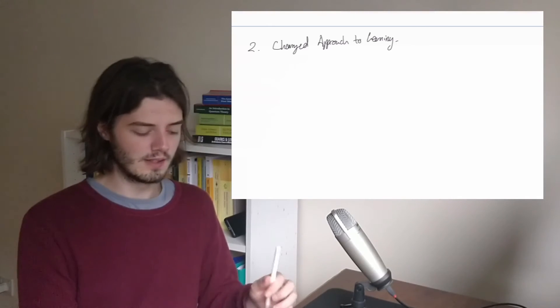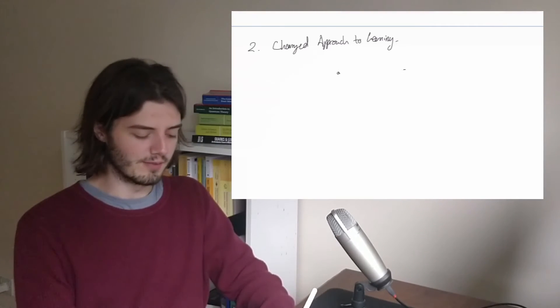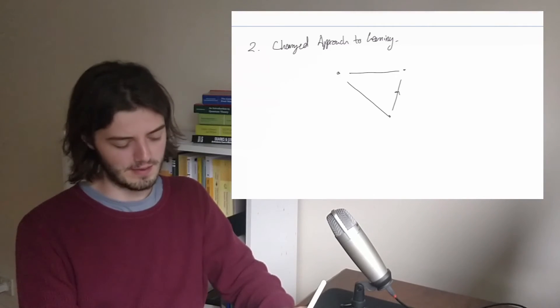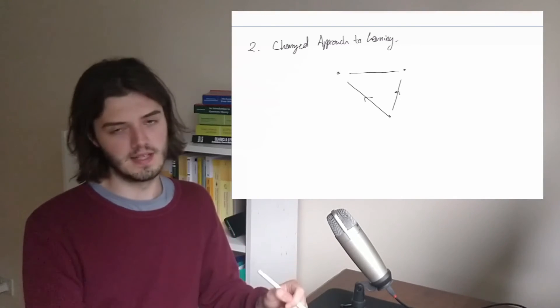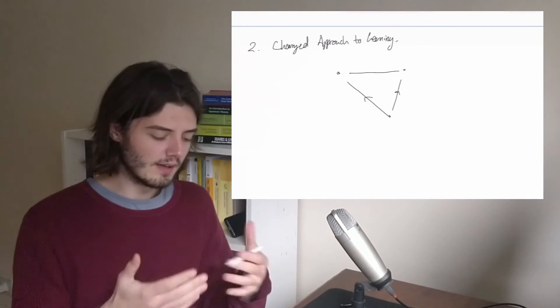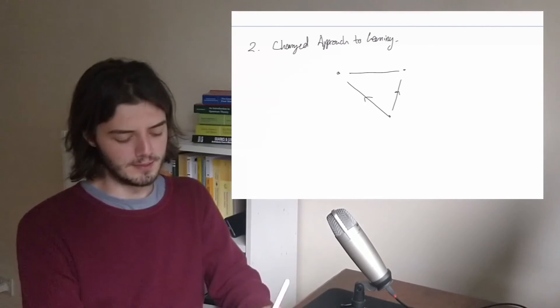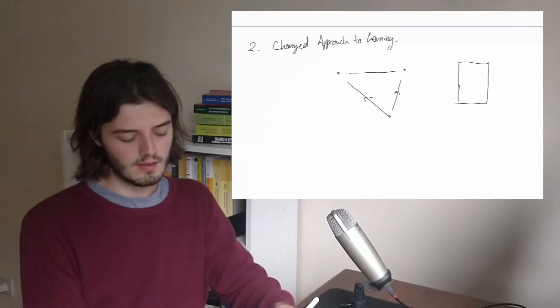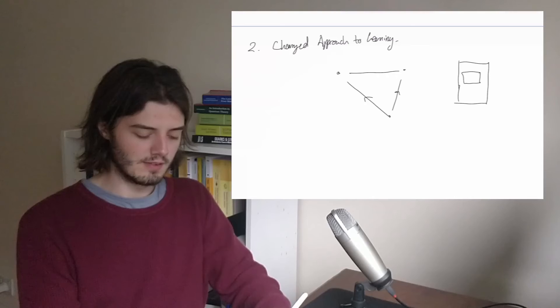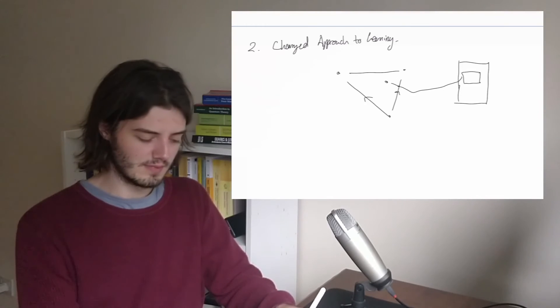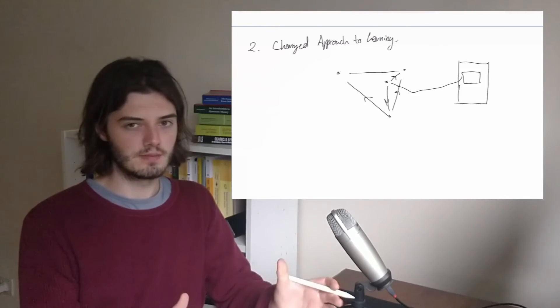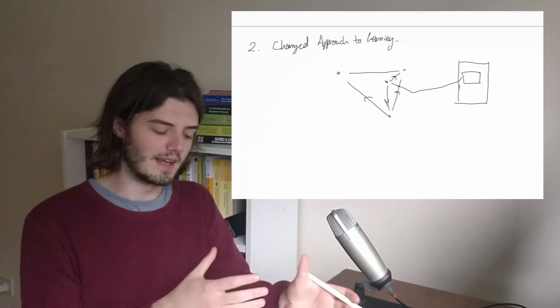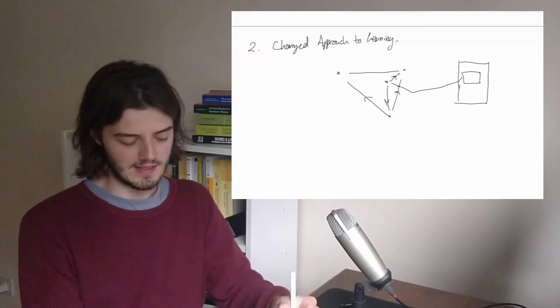I think what the Zettelkasten does is it really reverses that. You have your network of notes, and this is almost your frame of mind or the way that you think about things is represented in the Zettelkasten. Then when you're reading a paper, you really want to read it and find bits of it that you then want to incorporate into your Zettelkasten. You really want to be thinking about how does this paper relate to the ideas that I already have and the ideas that I've already written down in the Zettelkasten.